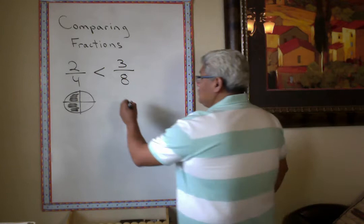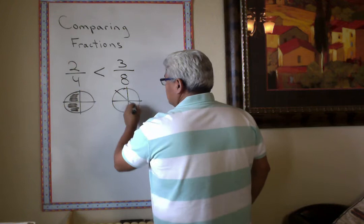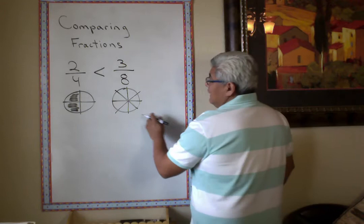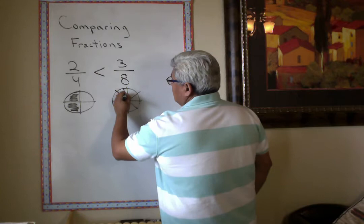Now, I bought another pizza, but this pizza got cut into 8 pieces. And let's pretend that they're the same size. Now, this one has more pieces. So now, I ate 3 pieces out of 8.